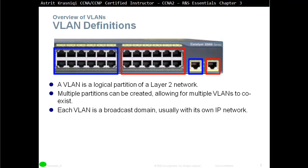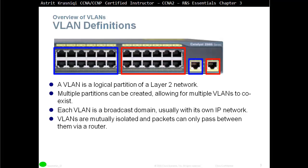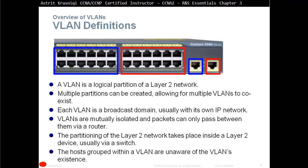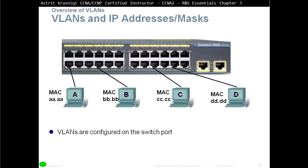There is a limit to how many VLANs you can create. Each VLAN is a broadcast domain, usually with its own IP address network. VLANs are mutually isolated and packets can only pass between them via a router or Layer 3 device. Packets from the blue VLAN cannot reach the red VLAN at Layer 2. The partition takes place inside the Layer 2 switch, and hosts grouped within a VLAN are unaware of other VLANs — they simply see the devices within their own VLAN.